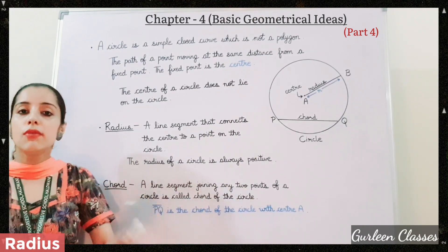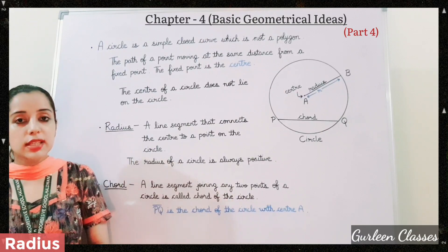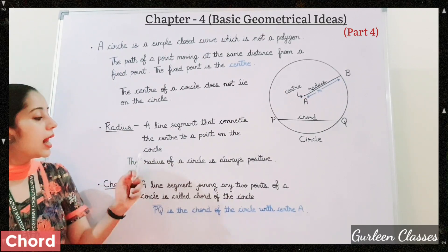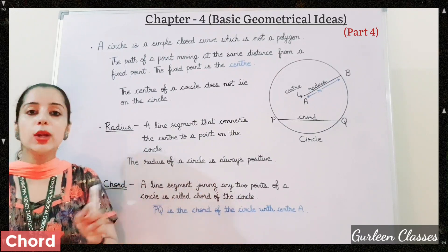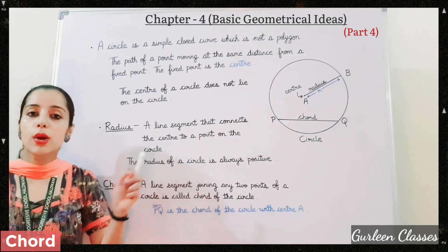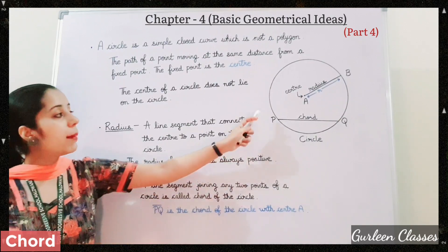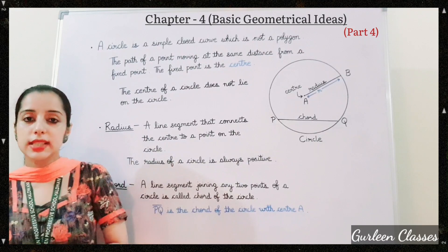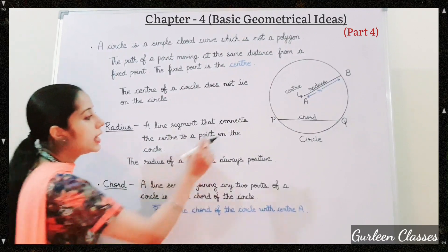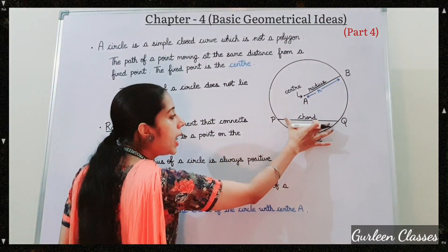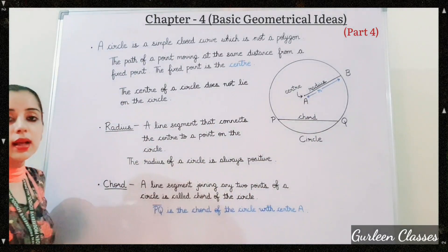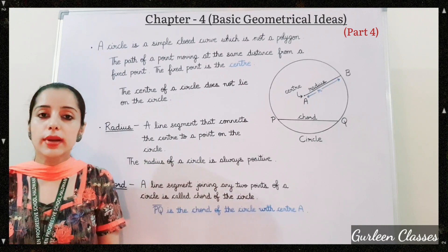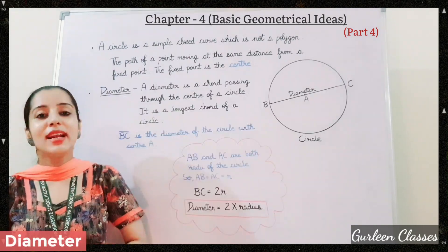The radius of a circle is always positive — radius of a circle is never negative. Next, we have chord. A line segment joining any two points on a circle is called a chord of the circle. Here, line segment PQ is the chord of the circle. If you take any two points on the circle and join them with a line segment, that is known as a chord of the circle.